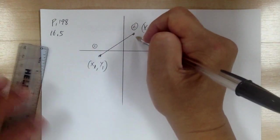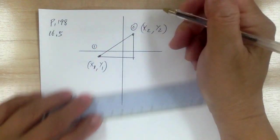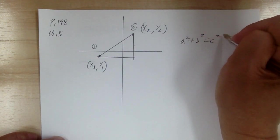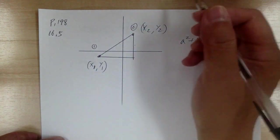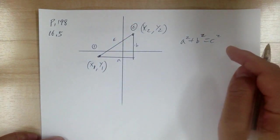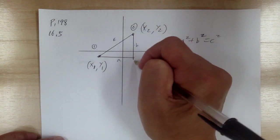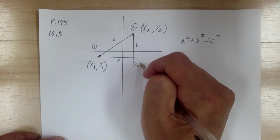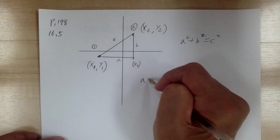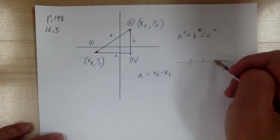To figure out this distance, you use the Pythagorean theorem — this distance is your C. The Pythagorean theorem is a² + b² = c². So we label the sides a, b, and c. To figure out a, you go straight down: here is x2 and here is x1, so a equals x2 minus x1.